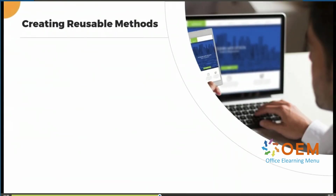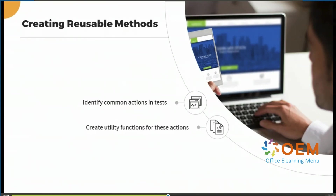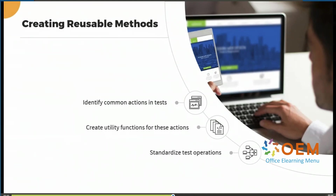Now, how do we create a reusable method? We start by identifying some common actions in tests, then we create the utility function for these actions. After that, we standardize the test operations to make sure that all our tests are using the same reusable method.